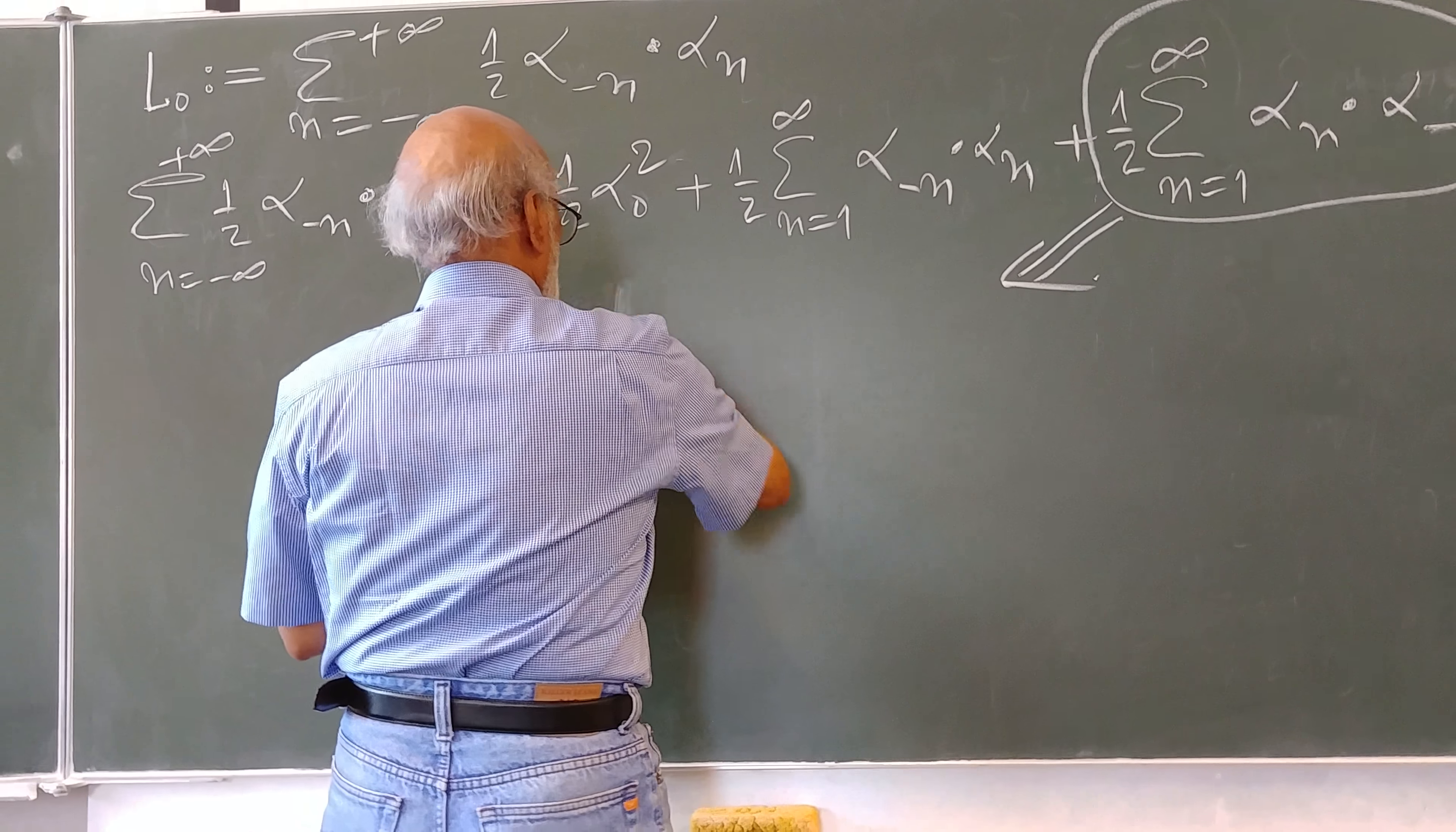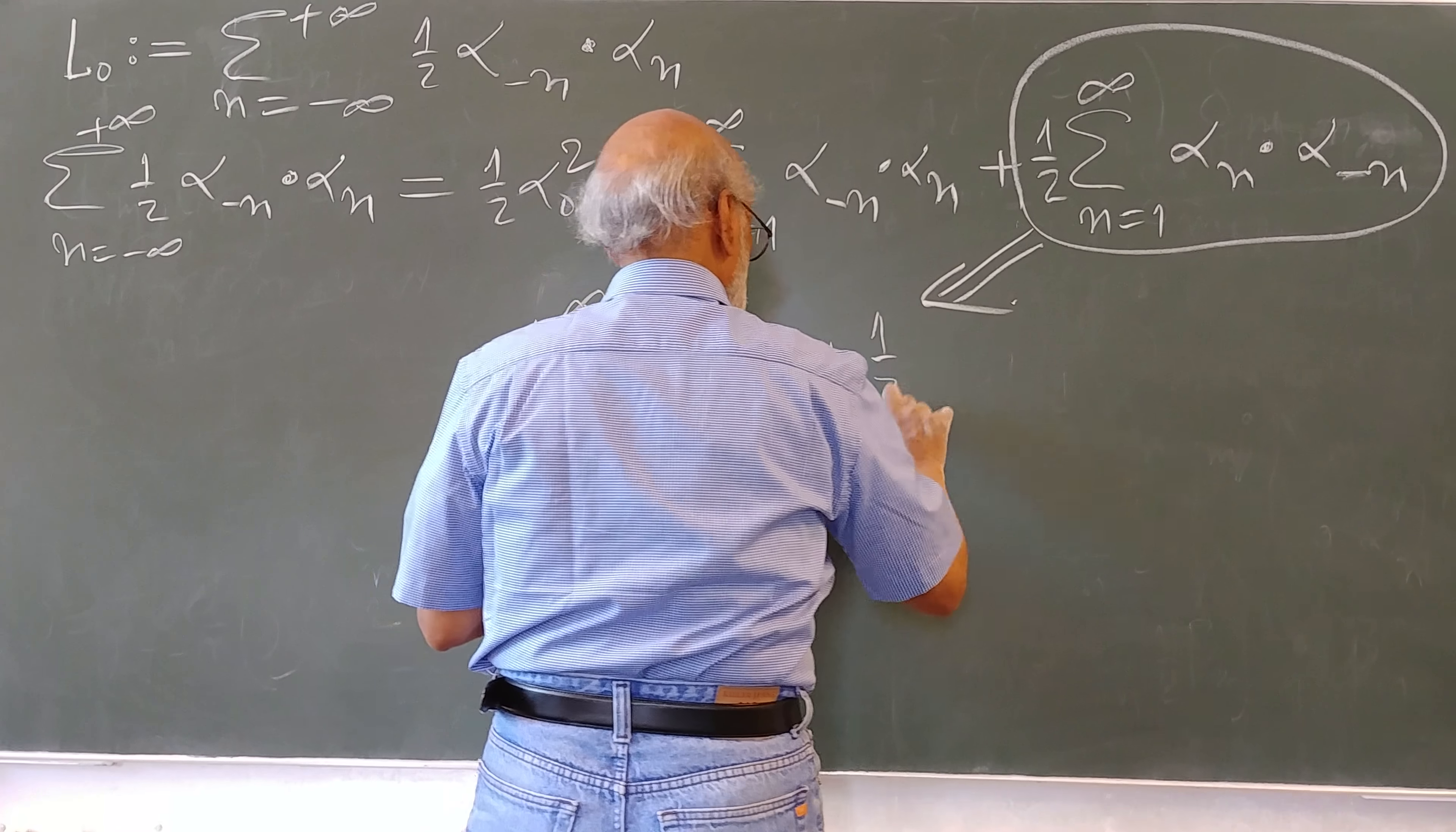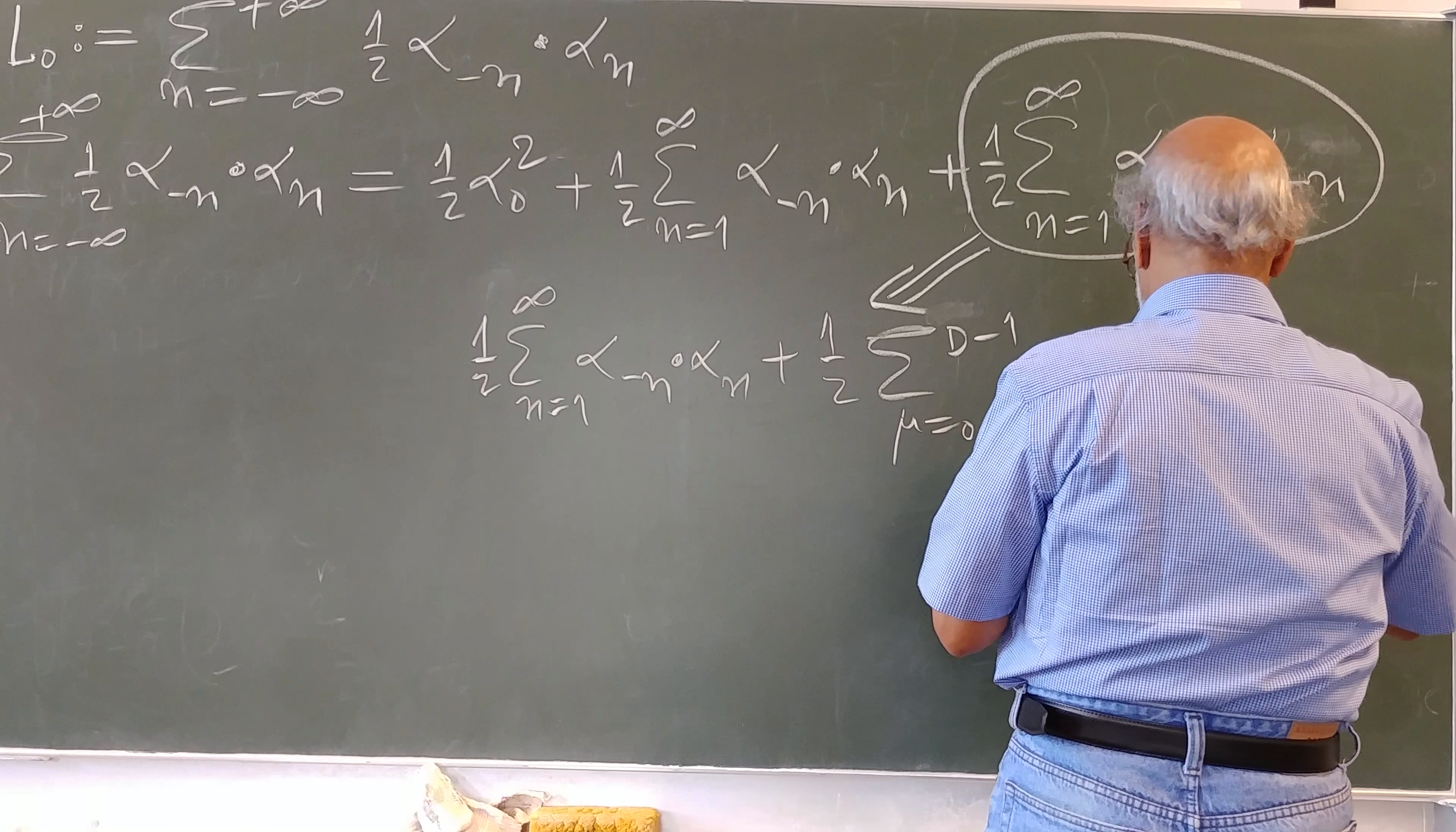One-half, one-half, n equal to 1 to infinity, alpha minus n, alpha n plus one-half of mu equal to 0 to b minus 1, eta mu mu times this.